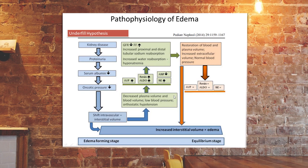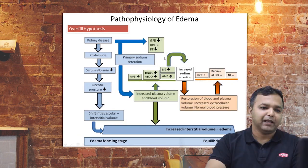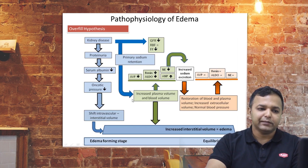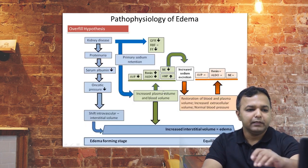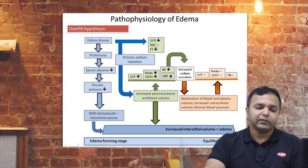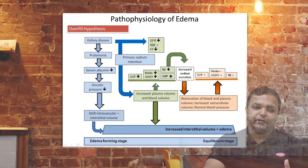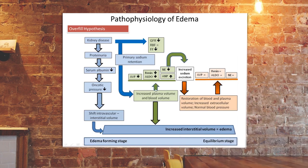This underfill theory has been challenged over time. The widely accepted hypothesis now is the overfill hypothesis. In overfill hypothesis, it is not just the decrease in oncotic pressure causing intravascular fluid shift; rather, it is because of changes in tubular adaptation to sodium and water absorption, causing enhanced absorption and resulting in increased plasma volume and blood volume. The difference is that in underfill, plasma volume is supposed to be low — but in nephrotic syndrome, the intravascular volume is actually high. So overfill hypothesis is now the widely accepted one.